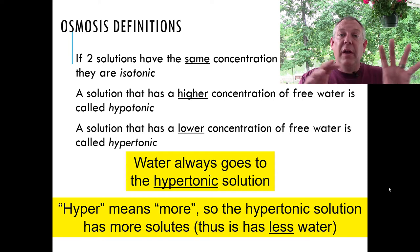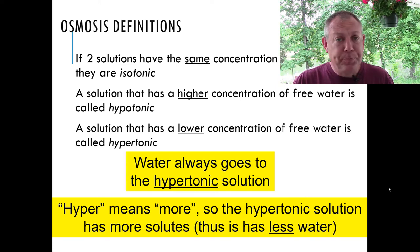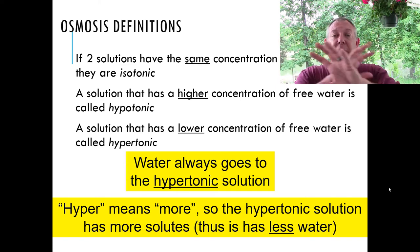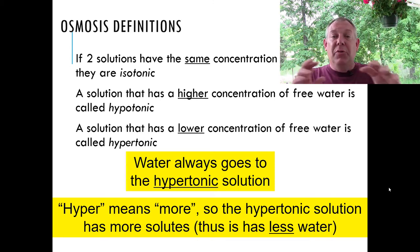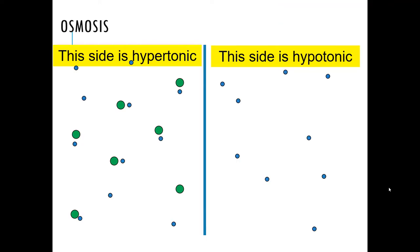This will continue until the concentration of free water is equal in both solutions — until they become isotonic. When they're isotonic, molecular movement doesn't stop, but it's equal in both directions, so there's no net movement. In our example, the side with the urea on the left is hypertonic; the side that's just water on the right is hypotonic. You also hear terms like hyperosmotic, hypoosmotic, and isoosmotic — they mean the same thing.